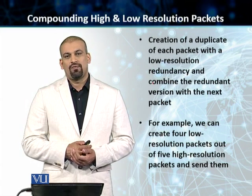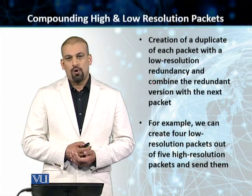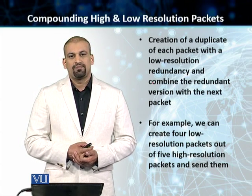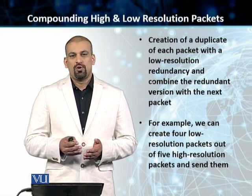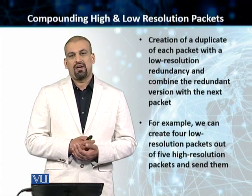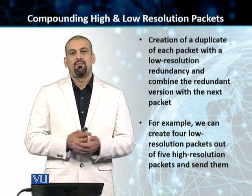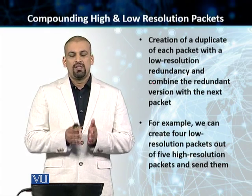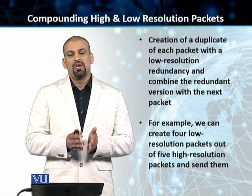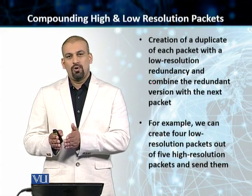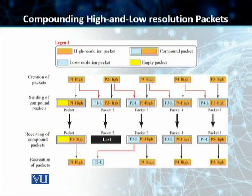The last technique of forward error correction is compounding high and low resolution packets. What we do in this technique is we create a low resolution redundancy version of every packet and embed that low resolution version in the next packet. For example, for packet 1, the high resolution version goes in packet 1, and then the low resolution version of packet 1 goes in packet 2. Similarly, the low resolution version of packet 2 goes in packet 3, and so on.